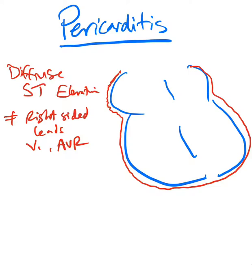To add more, we also see depressed PR segments in pericarditis. If you see a depressed PR with an elevated ST in the same lead, make sure you say it's pericarditis. We hardly ever see depressed PR segments in other diseases.